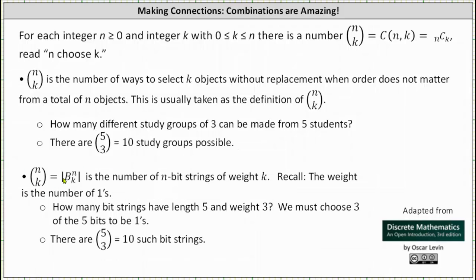n choose k is also the cardinality of b n k, which is the number of n bit strings of weight k. Recall the weight is the number of ones. As an example, how many bit strings have length five and weight three? We must choose three of the five bits to be ones. There are five choose three or ten such bit strings.